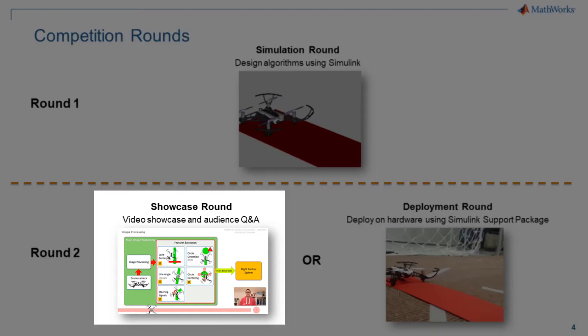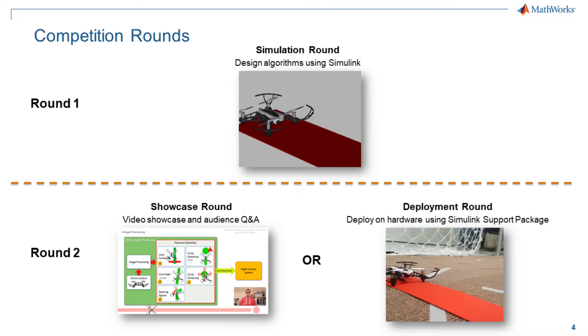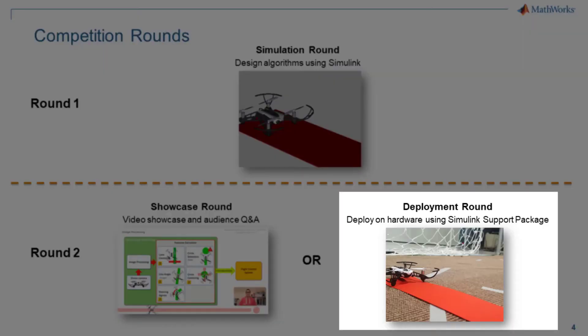If it is a virtual competition, the second round would be a virtual showcase where the shortlisted teams showcase their approach to the problem statement through a video and a question and answer session. However, if the competition is an in-person event, the top individual teams will be called to a venue to deploy the algorithms on the hardware to check for its performance in a live environment.